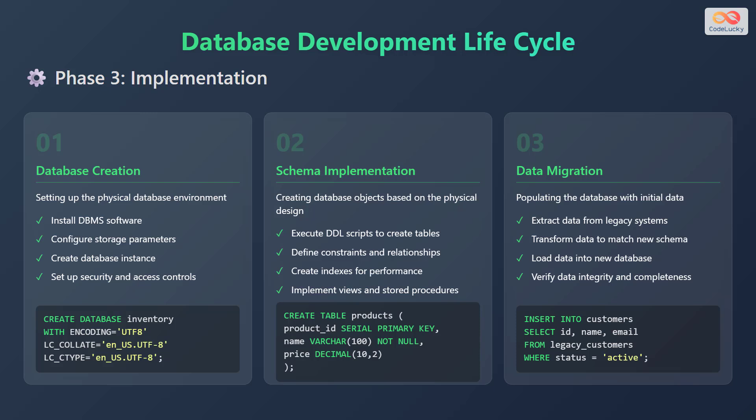Schema implementation involves creating database objects based on the physical design. This includes executing data definition language, or DDL scripts, to create tables, define constraints and relationships, create indexes for performance, and implement views and stored procedures. An example of code is shown.